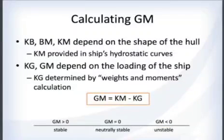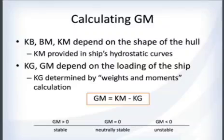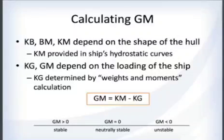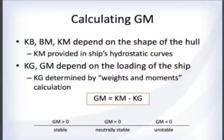KB, BM, and KM all depend on the hull shape and are provided by the ship's hydrostatics curves from a computer program. KG, the vertical center of gravity, depends on loading, so you calculate KG using a weights and moments calculation and then back out GM.